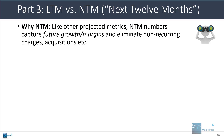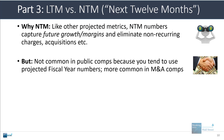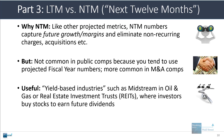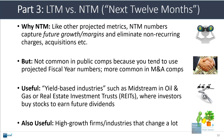Just like other projected metrics, the next 12 months numbers capture future growth and margins, and they eliminate non-recurring charges, acquisitions, and other items in the historical numbers. NTM is not that common in public comps, where you normally use projected fiscal year numbers, but you do see NTM more often in M&A comps. It's probably most useful in yield-based industries like midstream, oil and gas, or REITs, where investors care about specific forward dividends. In high-growth industries, this number can also be quite important, as firms growing at 50-100% are often bought or sold based on expected performance over the next one to two years.